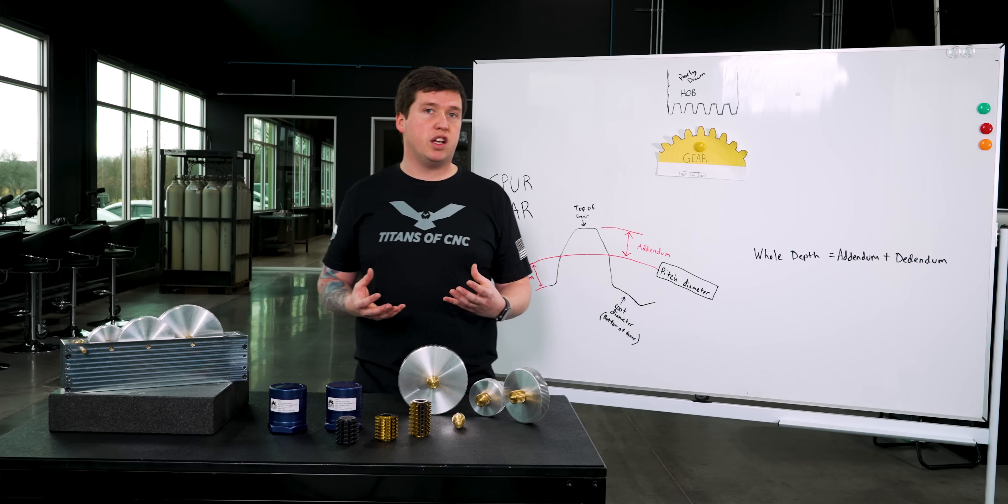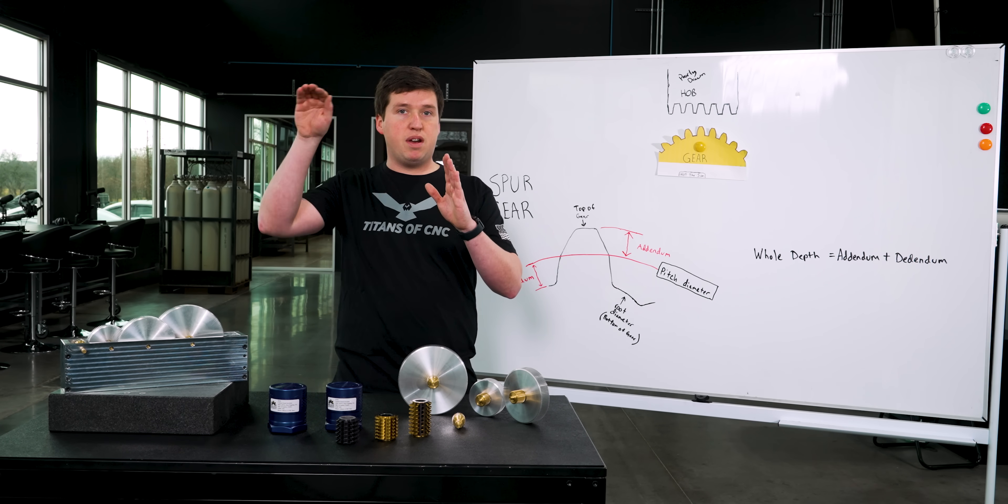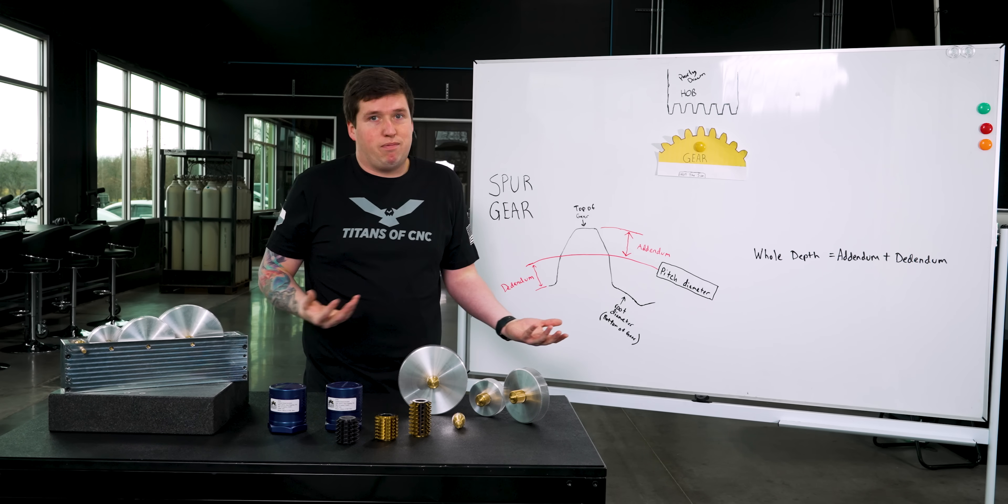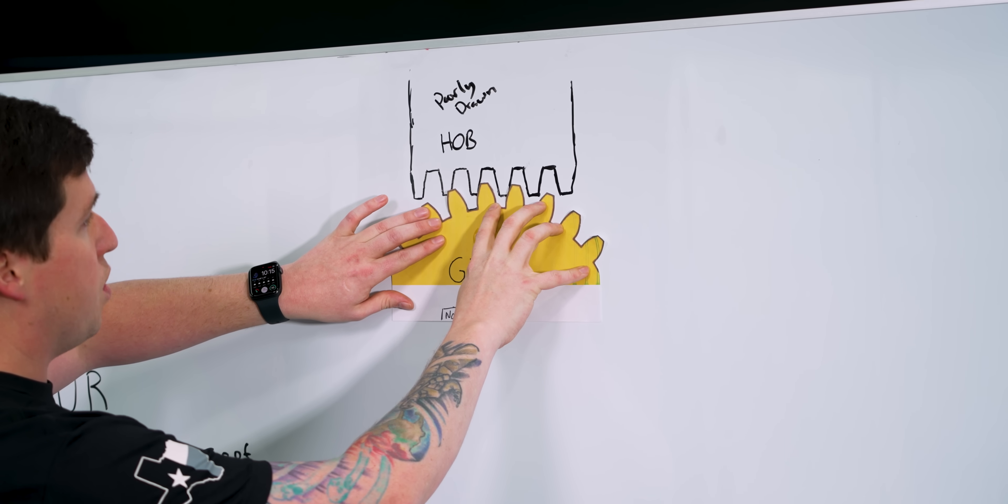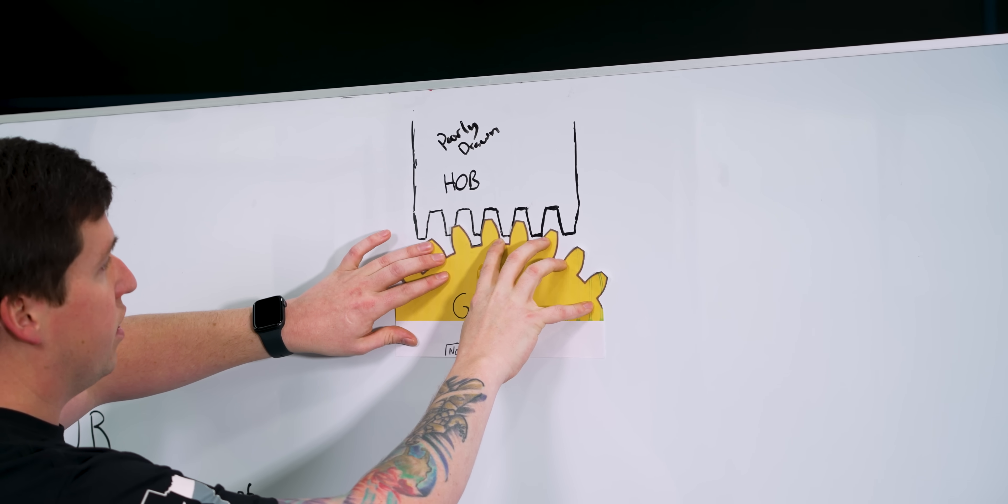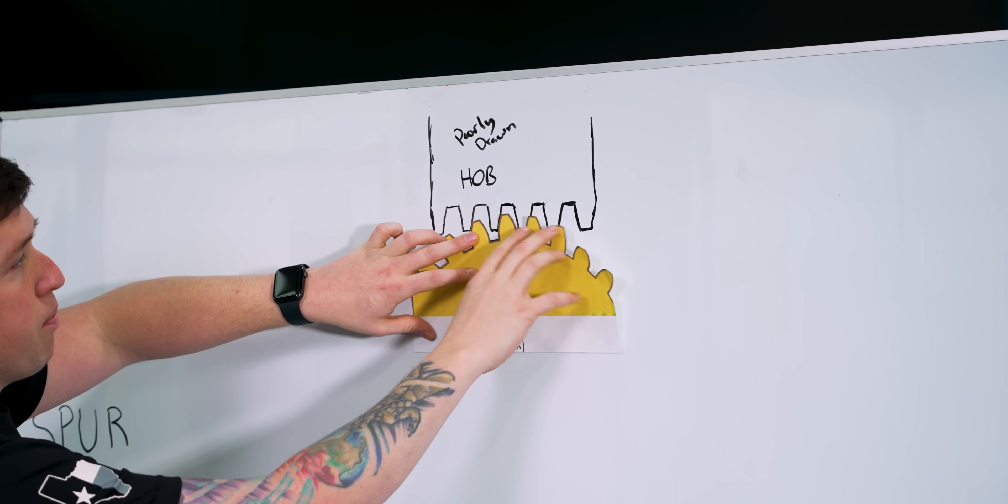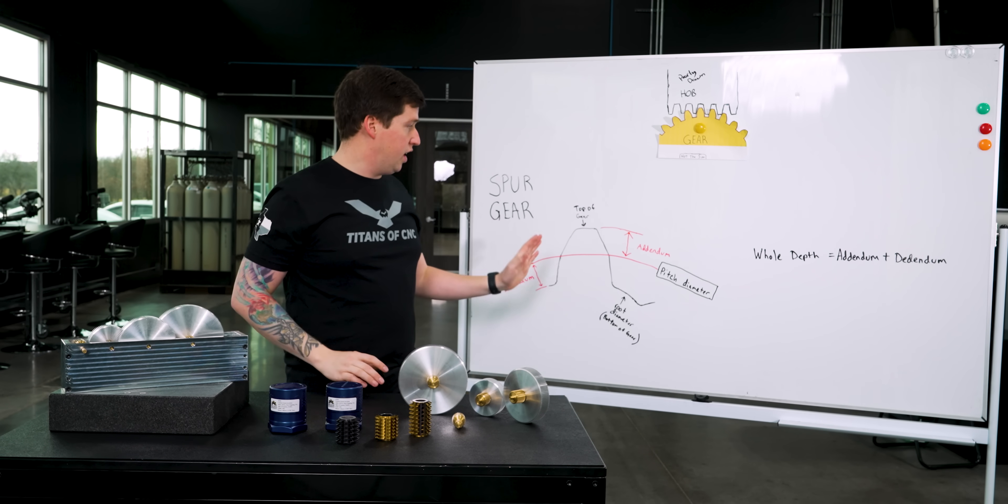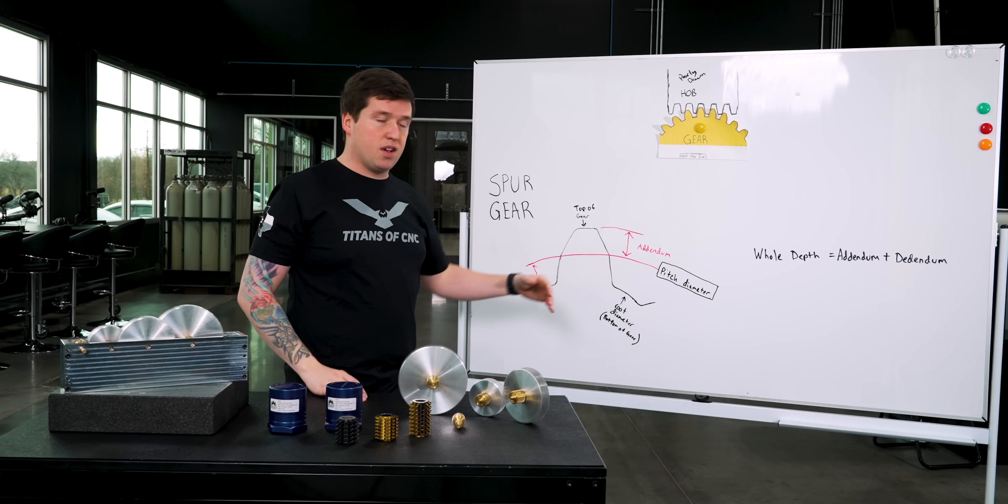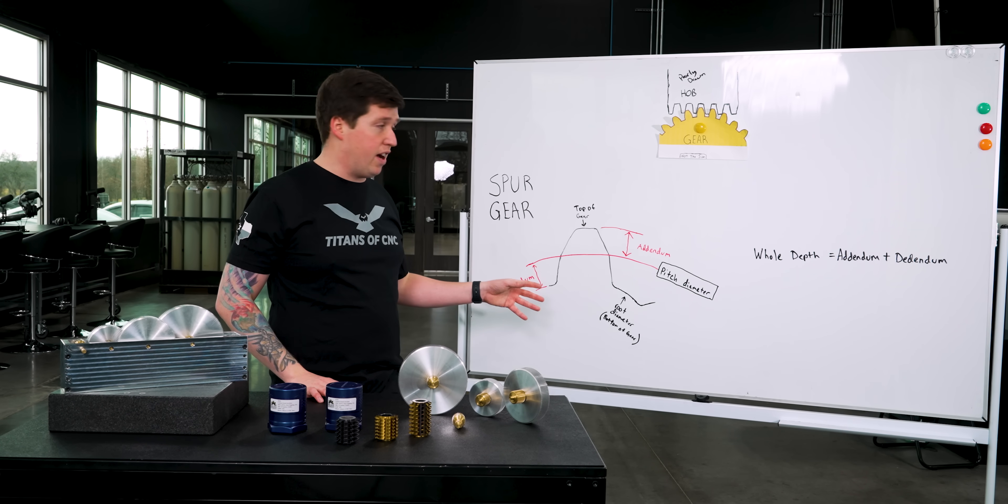Nothing too crazy there, but I want you to understand that about gear hobbing. When you're watching this machining footage, you need to know that the reason why your gear has an addendum and a dedendum is because of the way hobbing works. If you take our gear right here and you push it up into this poorly drawn picture of a hob that I did here, you can see at different points of the hobbing process, different parts of the hob will be touching different parts of the gear. And that's what's going to create this shape. So again, the bigger the gear, the less you're going to notice this. The smaller the gear, it's going to be a lot more profound.